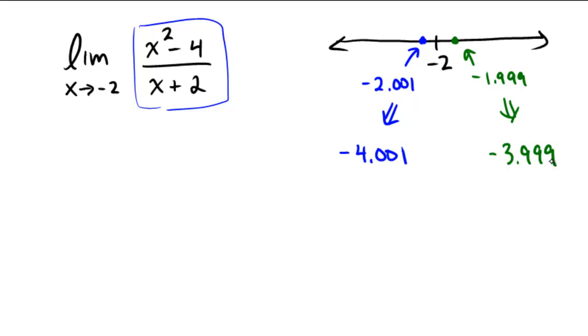That's convenient. So what number do we know and love that's just between negative 4.001 and negative 3.999? Well, that would be the number negative 4. So that seems to be indicating that this limit here must be the value of negative 4.